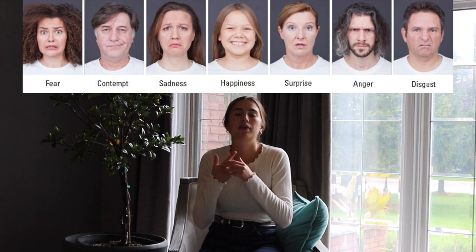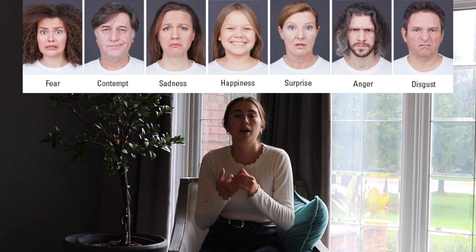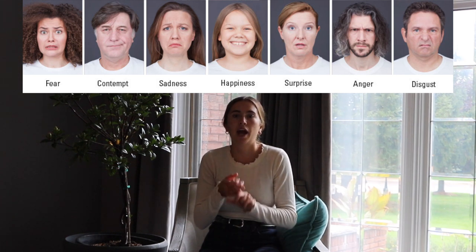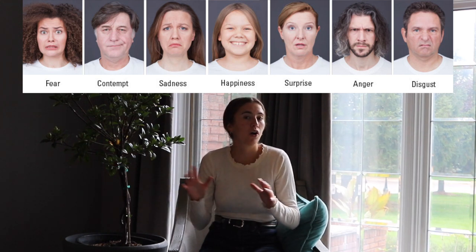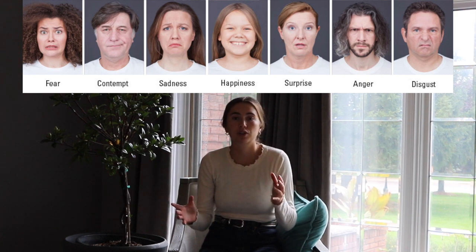There are seven universal emotions — emotions observed cross-culturally. Those include happiness, sadness, disgust, fear, shock, anger, and contempt. These facial expressions are not different from culture to culture. Even though cultures develop differently and body language may vary, these emotions come across the same way.